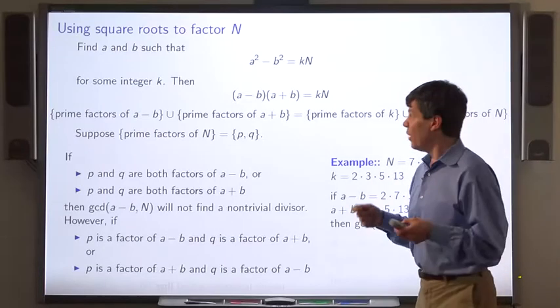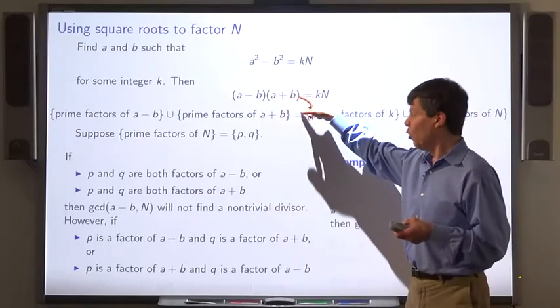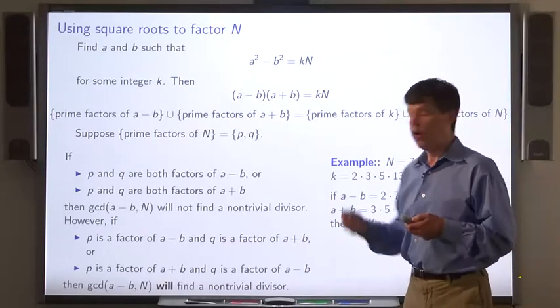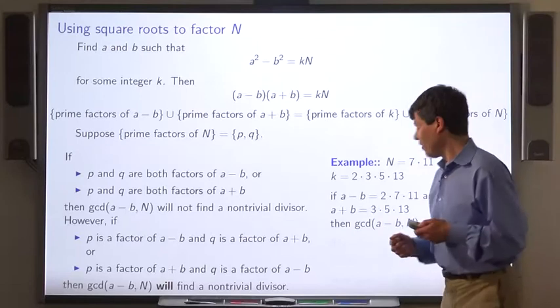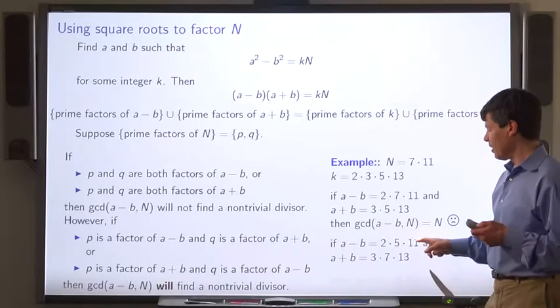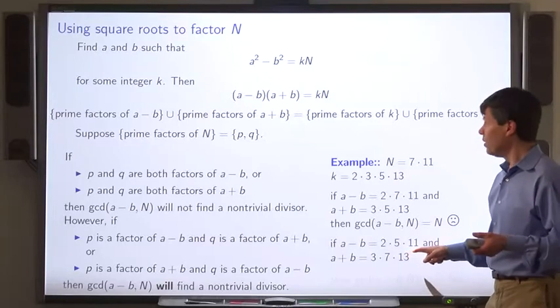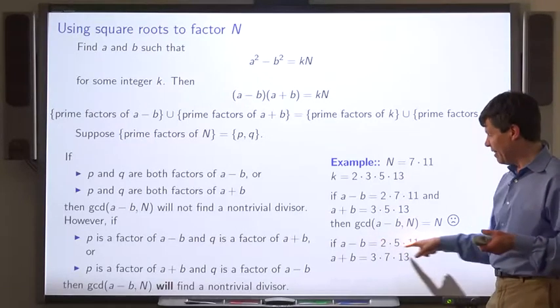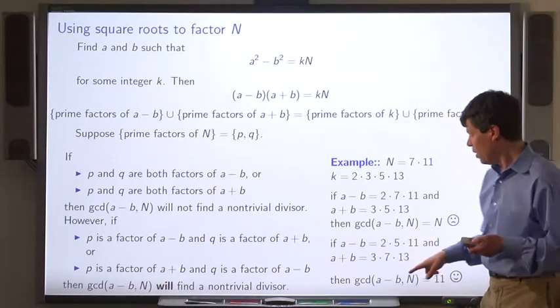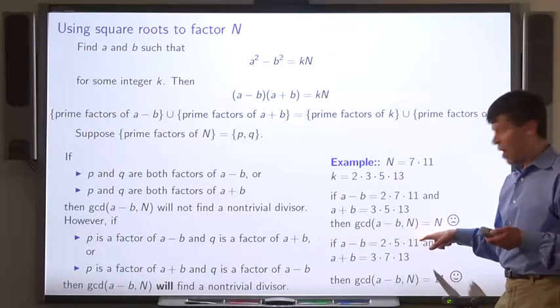But if p, say, is a divisor of a minus b and q is a divisor of a plus b or vice versa, then in fact the GCD of a minus b with n will find a non-trivial divisor. For example, let's say a minus b is 2 times 5 times 11, a plus b is 3 times 7 times 13. Well, one of the prime factors of n is in the factorization of a minus b and one of them is in the factorization of a plus b. So GCD of a minus b with n will find you the factor 11.